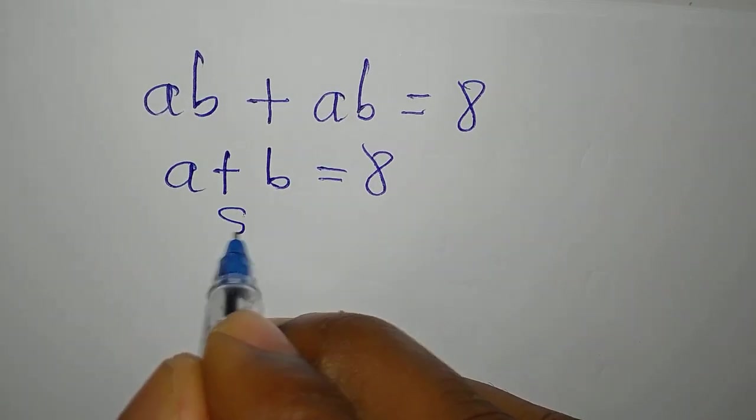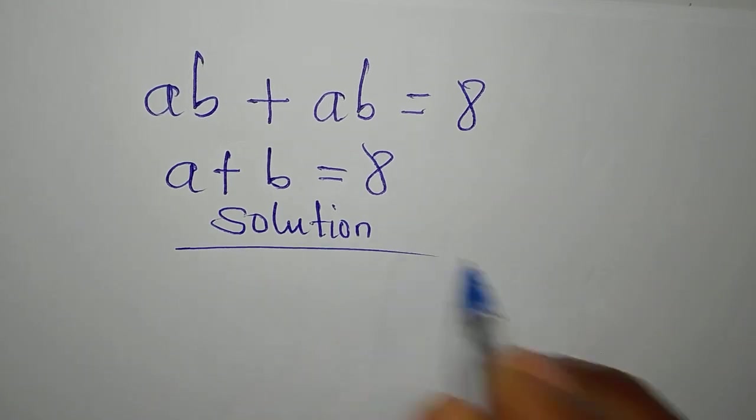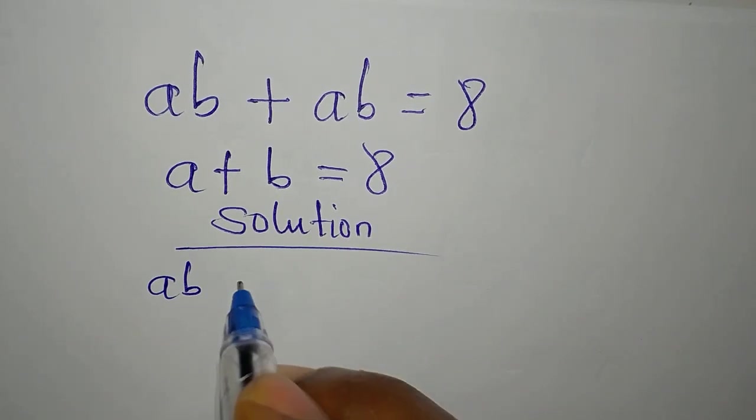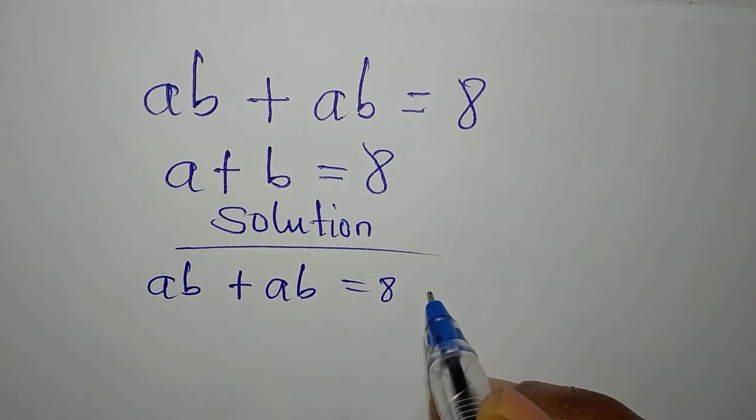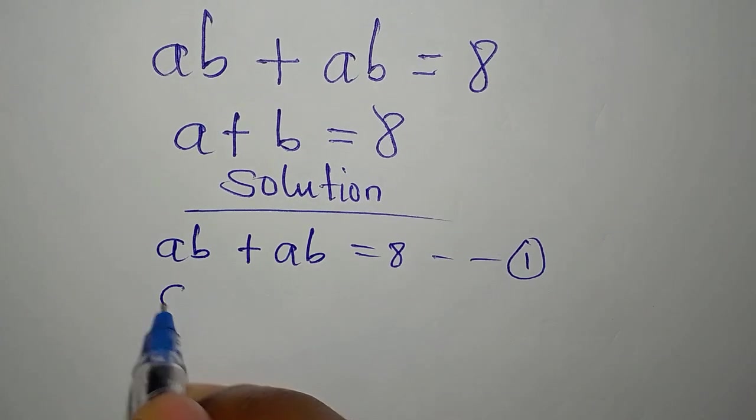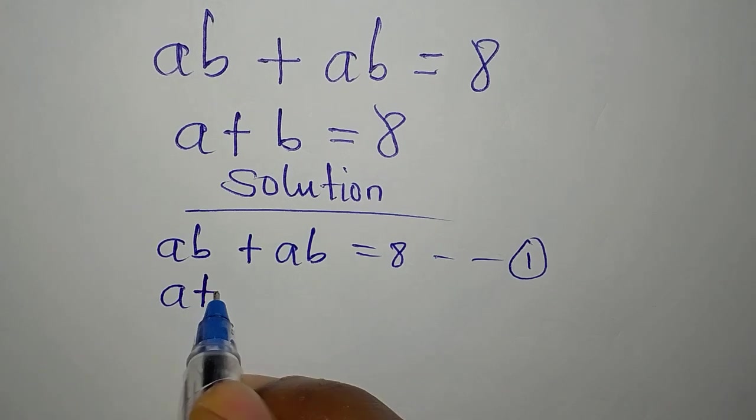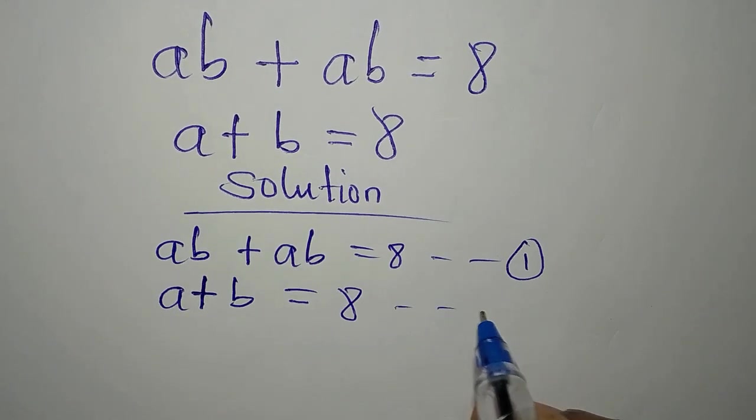Hey everyone, let's solve this problem simultaneously. We have AB plus AB equals 8. This is our equation 1. And our equation 2 is A plus B equals 8. This is equation 2.